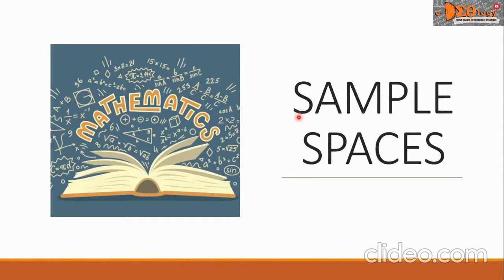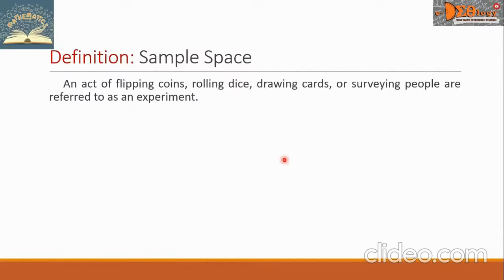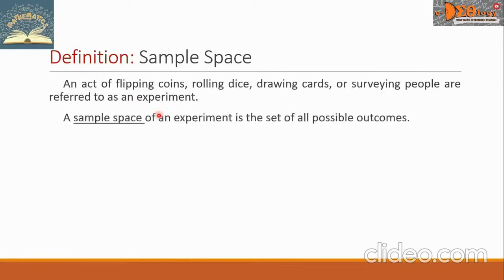Hi, everyone. Today, we're going to study sample spaces. Let us define sample space. An act of flipping coins, rolling dice, drawing cards, or surveying people are referred to as an experiment. A sample space of an experiment is the set of all possible outcomes.